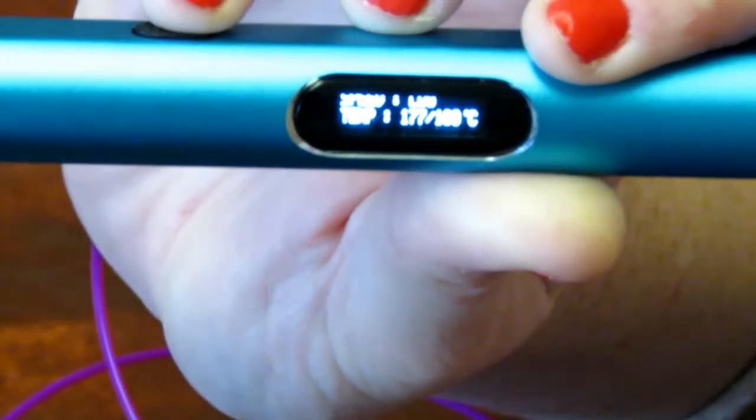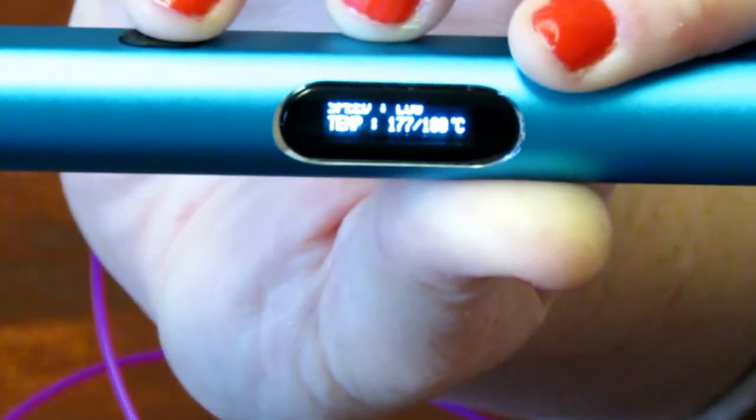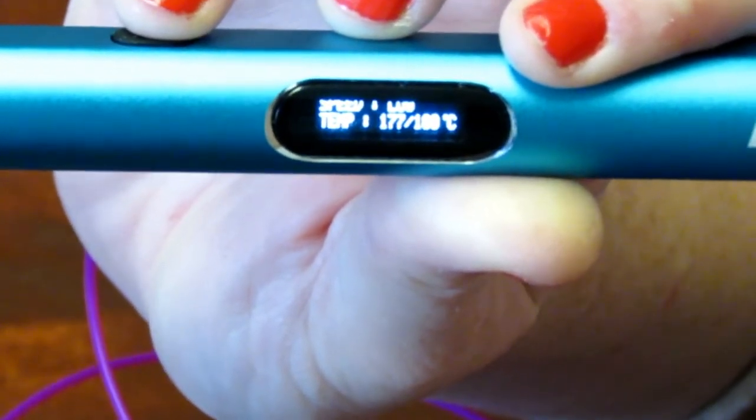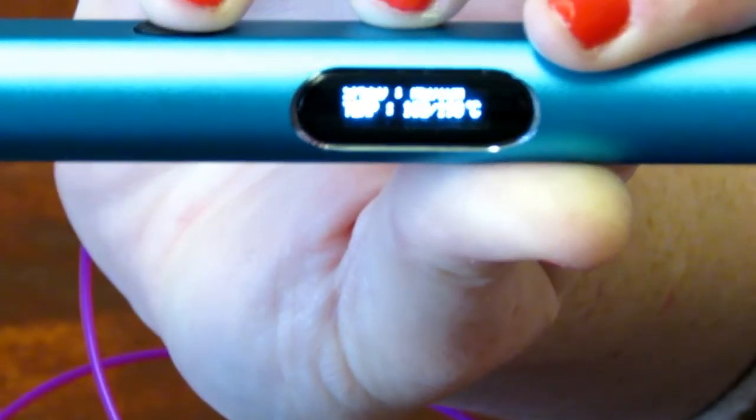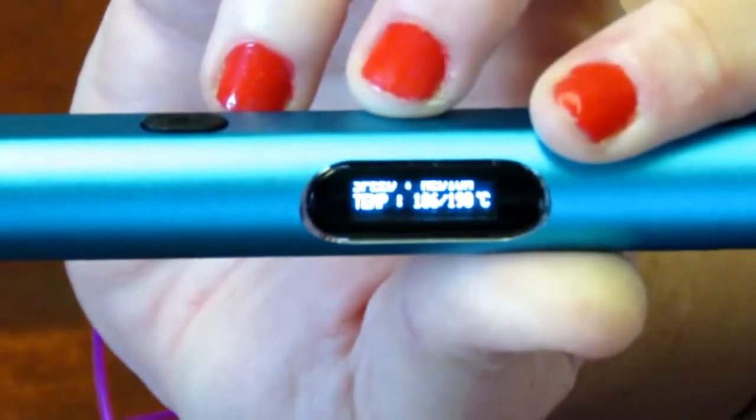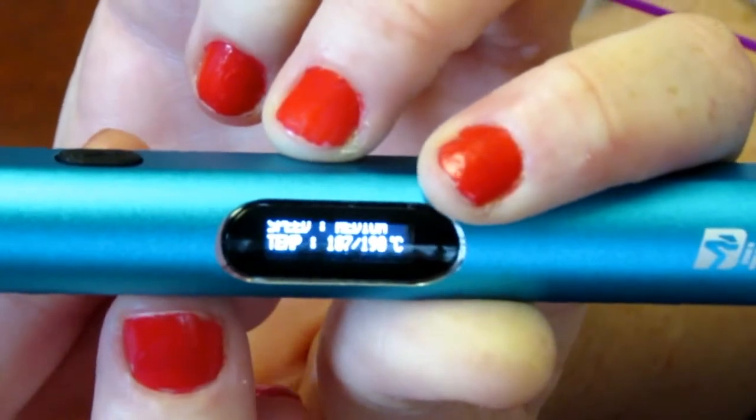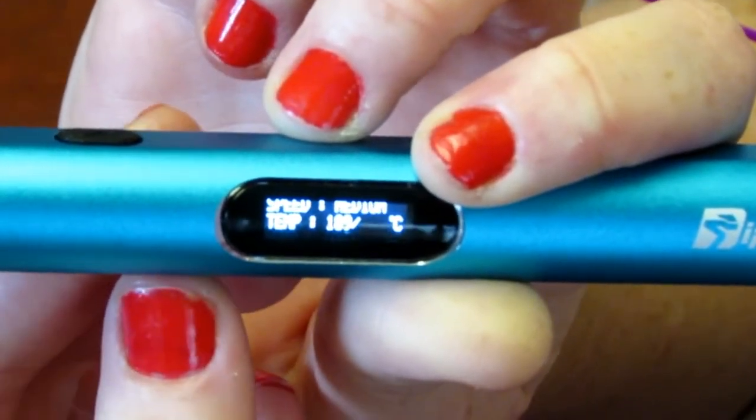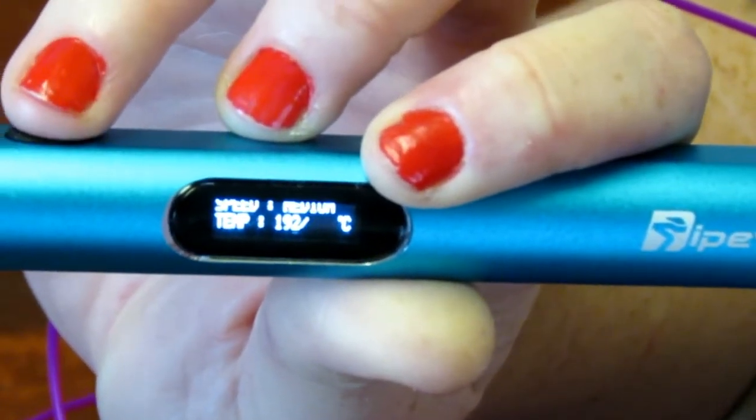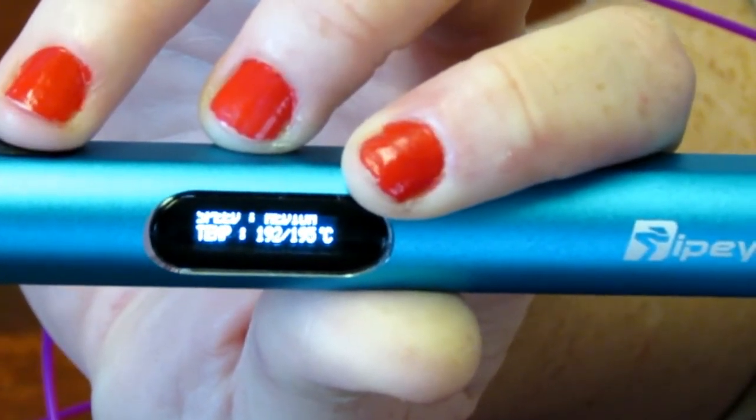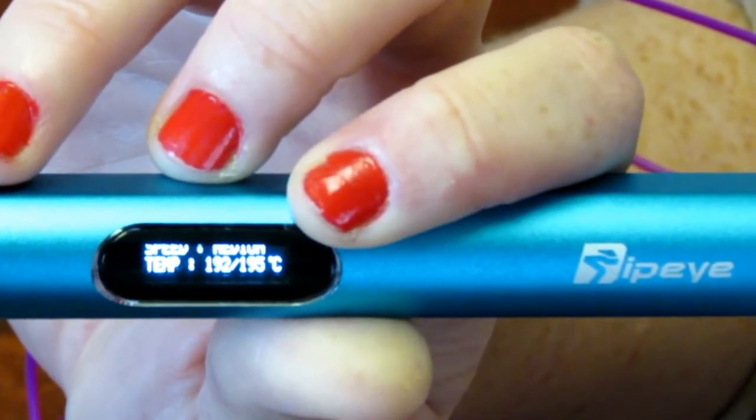Sometimes, like especially glow-in-the-darks or metallic filaments, it needs to be a little hotter. To do that, you can hold down the check mark and you will see that the 190 is blinking. That way you can adjust it by pushing the feed. So if I want to raise it about five degrees Celsius, I can, and you'll hit the check mark again and it will begin to rise to 195.